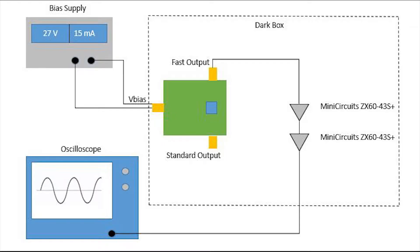The SIPM SMA evaluation board is placed within a dark box. The fast output is connected through two mini circuits amplifiers in series to an oscilloscope.